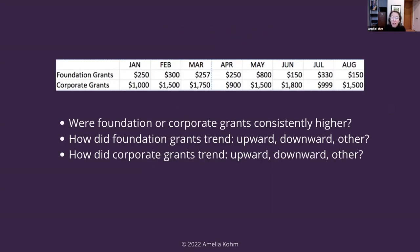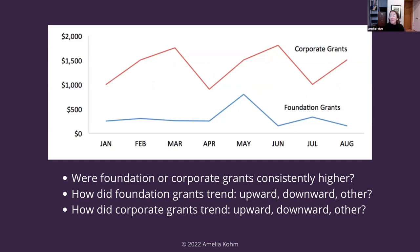Here's another test. Quickly try to answer these three questions using the really simple spreadsheet at the top: Were foundation or corporate grants consistently higher over time, and what were the patterns among each type of grant? When I show you this exact same data in a visual format, it's way easier to digest. We can see that corporate grants were consistently higher over time, foundation grants remained relatively flat with one glaring exception — that sharp increase in May — and corporate grants had a cyclical up-up-down pattern on a quarterly basis, always peaking in the last month of the quarter.